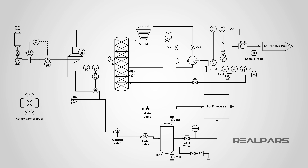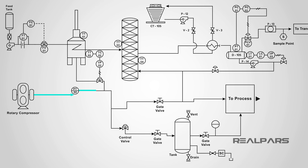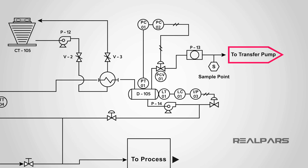As well as devices and pipelines, a P&ID will commonly contain information on vents, drains, and sampling lines, as well as flow directions, control I/O, and interconnection references.